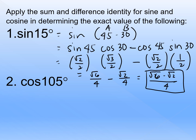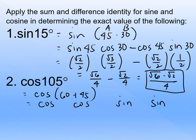Let's try another example: cos105 degrees. We can use 60 and 45 degrees, since 60 plus 45 equals 105 degrees. So we rewrite this as cosine(60 plus 45). Since it is cosine, we follow the pattern cos·cos, sin·sin, writing 60, 45, 60, 45. Since the operation is plus and we're dealing with cosine, we change the operation to minus.